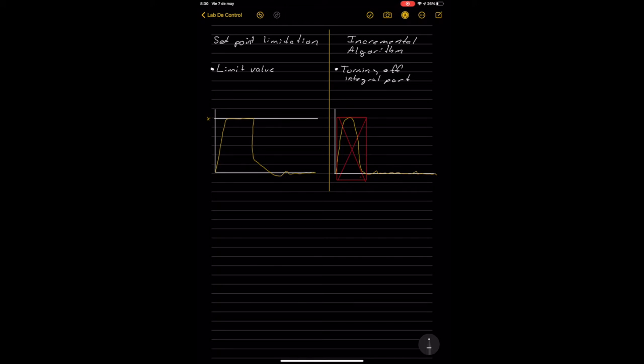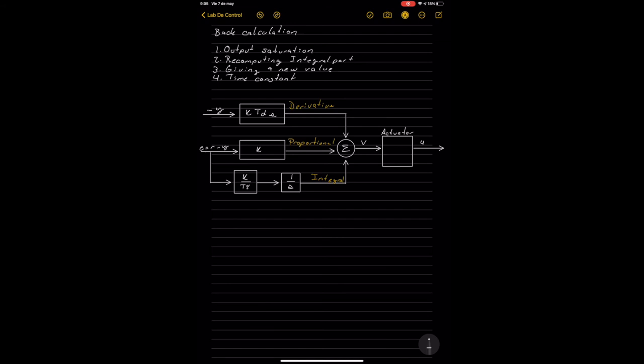Finally, the last method to see is the back calculation. For the back calculation, it is necessary to follow some steps. The first is the output saturation. The second one is the recomputing of the integral part. The third one is giving a new value to the integral part where the saturation limit is. Finally, the fourth one will be obtaining the new time constant created by the new loop system.